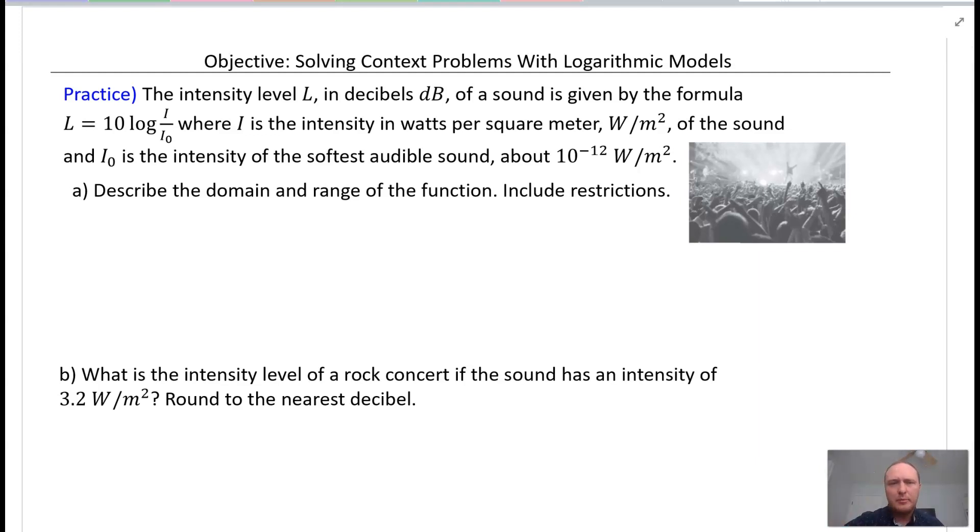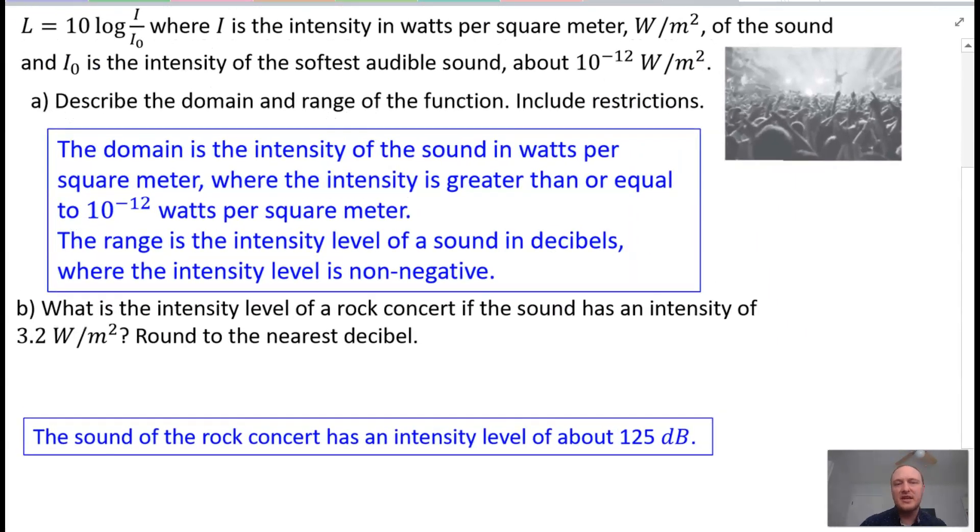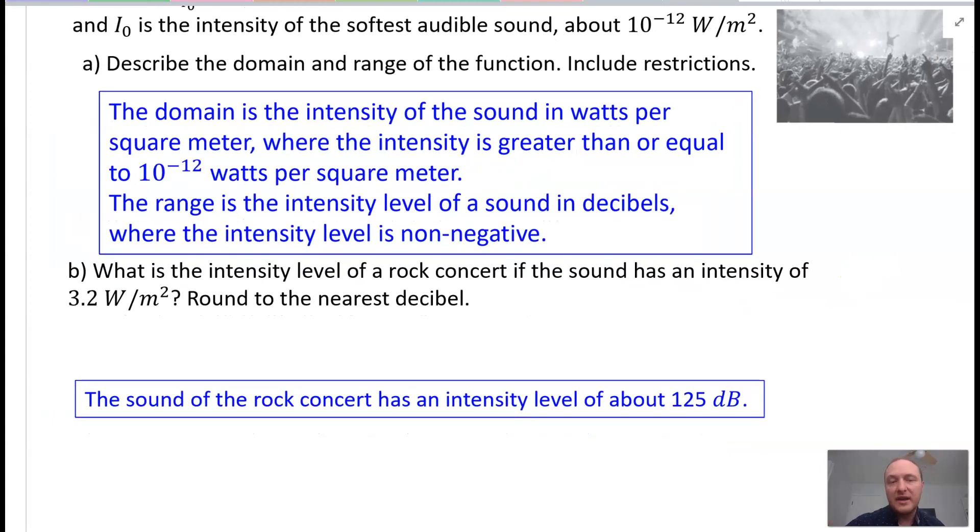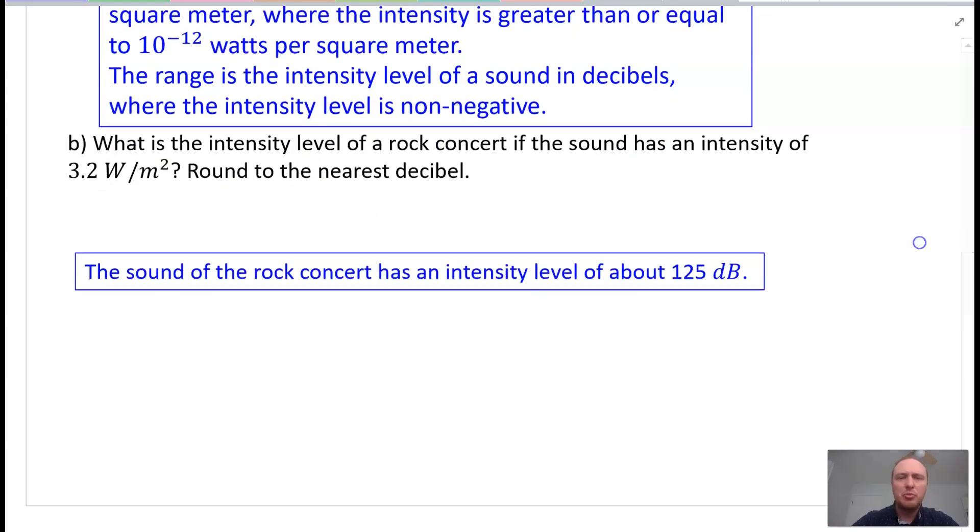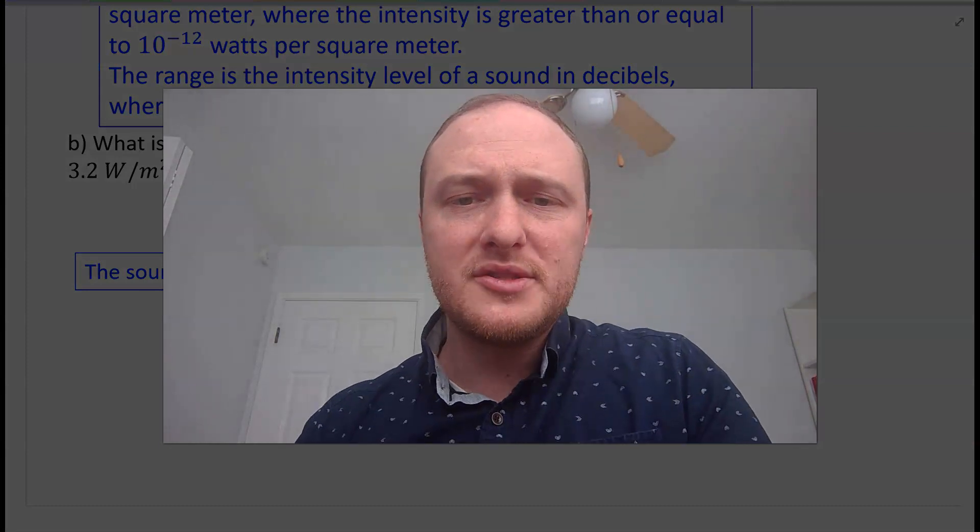Okay, so hopefully you have done parts A and B, and here is the solution. The domain is the intensity of the sound in watts per square meter, where the restrictions are greater than or equal to 10 to the negative 12 watts per square meter. Range is the intensity level of the sound in decibels, where the intensity level is non-negative or greater than zero. So part B, what is the intensity level of rock concert with a sound intensity of 3.2 watts per meter squared, and that would be about 125 decibels. All right, that is it for solving context problems involving logarithmic models. Catch you next time. Peace.